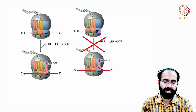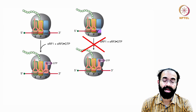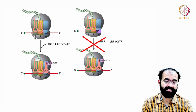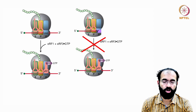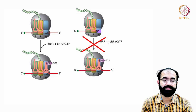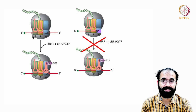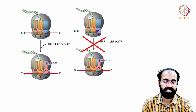Let us see how this works. Normally during translation you have the two ribosome subunits with three sites: the acceptor site (A site), the peptide transferase or peptide bond-forming site (P site), and the exit site (E site). A tRNA with an amino acid enters through the A site, a peptide bond is formed, and then it moves to the E site and exits.